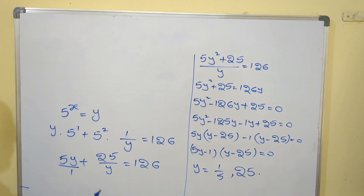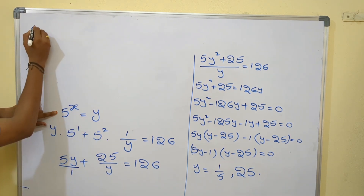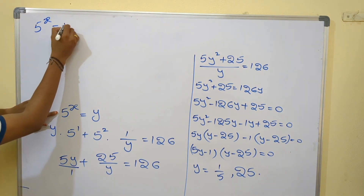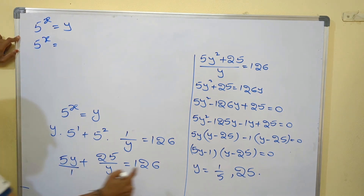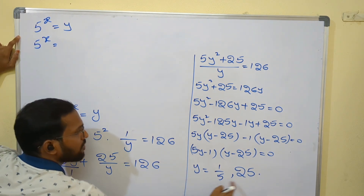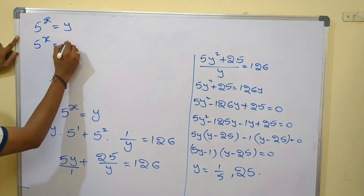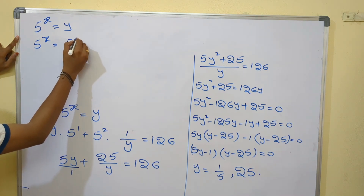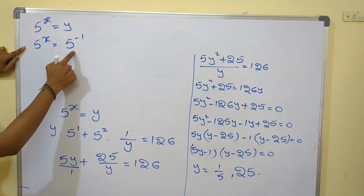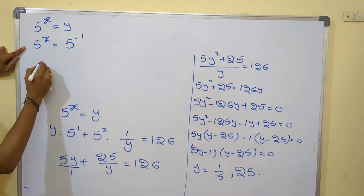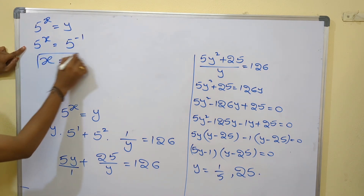Now let us find the x value. We had set 5^x = y. Taking the first value: 5^x = 1/5, which can be written as 5^(-1). Both bases are equal, so the powers are also equal: x = -1.